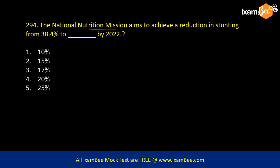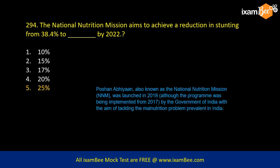The National Nutrition Mission aims to achieve a reduction in stunting from 38% to 25% by 2022. POSHAN Abhiyan, also known as the National Nutrition Mission, was launched in 2018 — although implementation started in 2017 — to tackle the malnutrition problem in India.